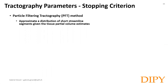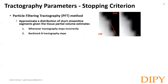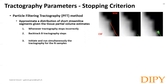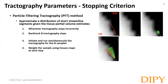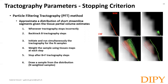To reduce the number of excluded streamlines, the particle filtering tractography (PFT) approximates a distribution of short streamline segments given the partial volume estimate, to find an alternative trajectory when tractography incorrectly stops in the white matter or CSF. Whenever tractography stops incorrectly — for instance the red streamline — it backtracks a few tractography steps, for instance a few millimetres, to where the tractography was still propagating correctly in the white matter. It then initiates and runs simultaneously N sample trajectories, weights them using the tissue map at each step, penalizing trajectories going into voxels containing CSF. It stops after a few more steps, draws a sample from the weighted distribution, and selects that segment to replace the one ending in the CSF, then restarts the tractography normally in the white matter.